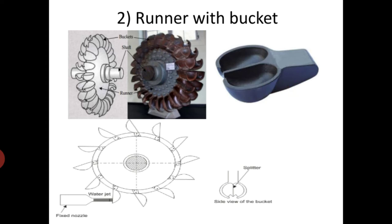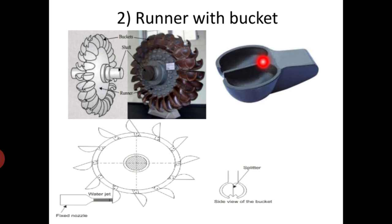The shape of the bucket is like two spoons joined together. The bucket has a common dividing edge. The incoming jet of water meets the bucket at the central edge, which is called the splitter. The jet strikes at the center of the bucket at the splitter, which divides it into two parts, and after turning through 160 to 170 degrees, the water leaves from the outer edge.